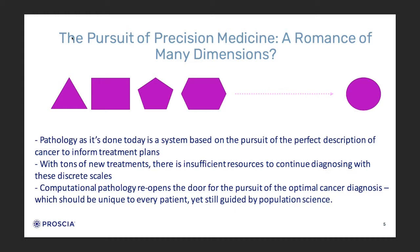With a lot of new treatments, precision medicine exists because there are more treatment options. You don't just unilaterally apply one treatment — you come up with new options. There's immunotherapy, which is really awesome and way less cytotoxic than chemotherapy. There are also a lot of cost implications. Our thesis is that computational pathology reopens the door for the pursuit of the optimal cancer diagnosis — getting that regular polygon as close to a circle as possible.